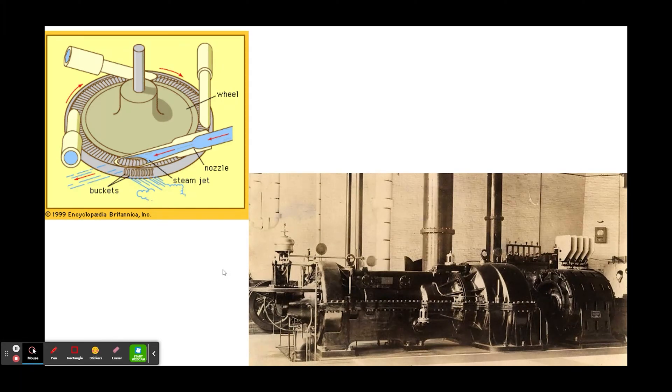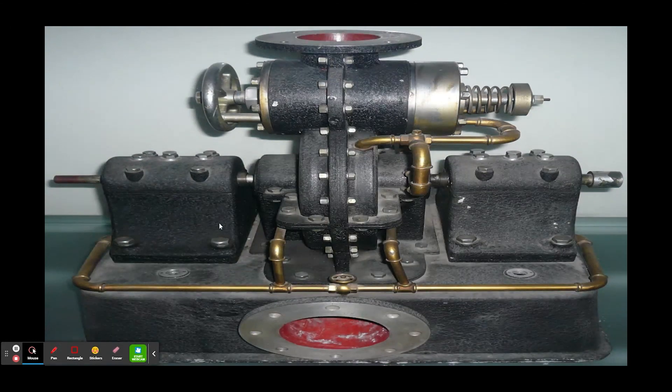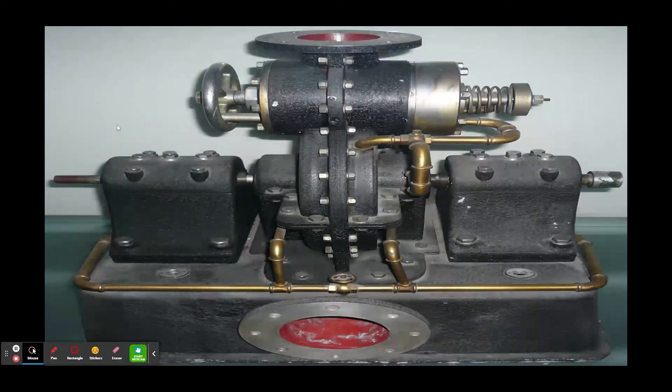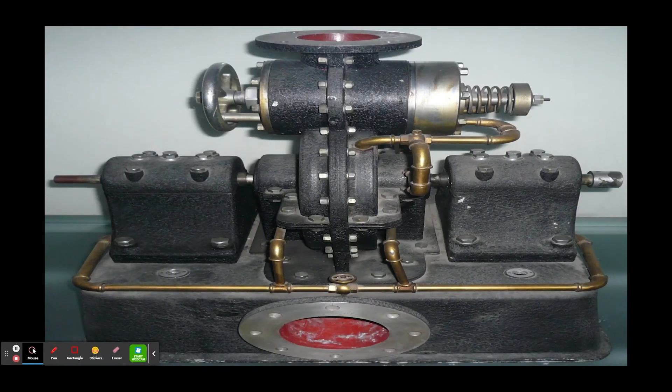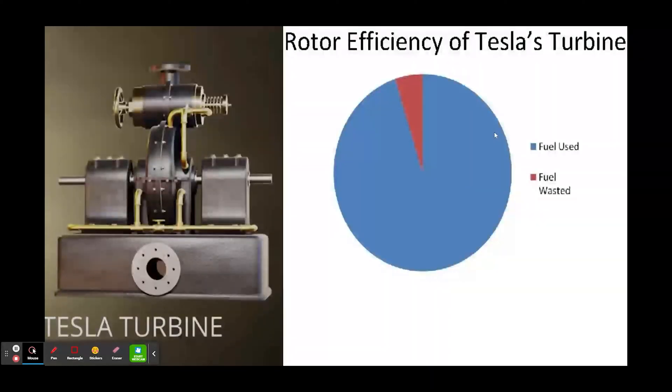Nikola Tesla came up with something else. This was about as big as your desktop or a computer monitor, and it produced the same energy as that one on the left with the same amount of steam. This one was way smaller, way more efficient, and produced the same horsepower or torque. This is the efficiency of Tesla's turbine, and for the early 1900s this was very efficient.